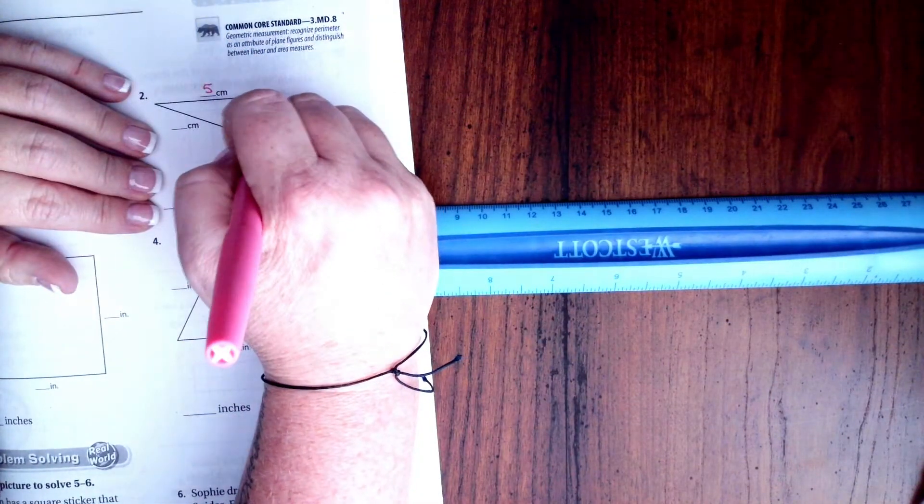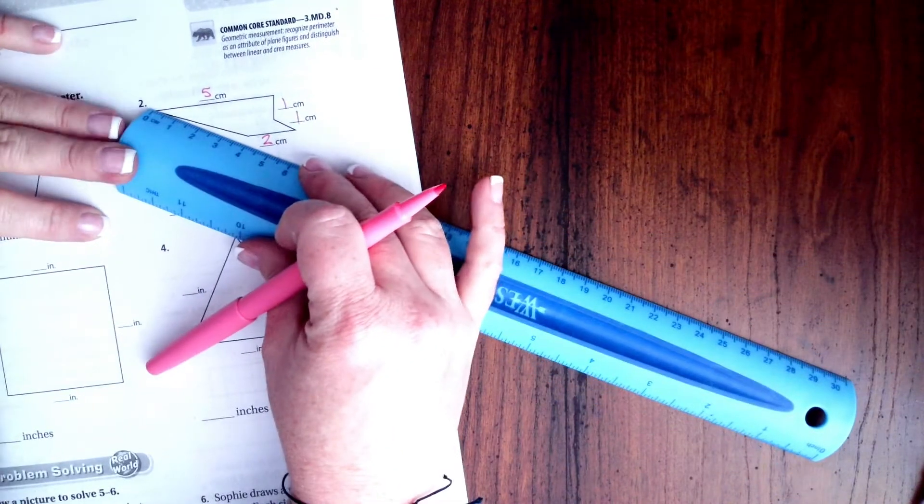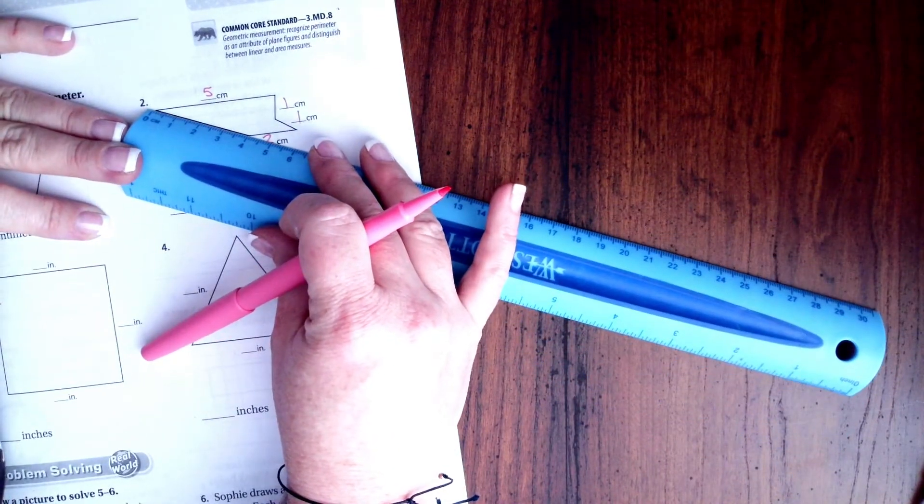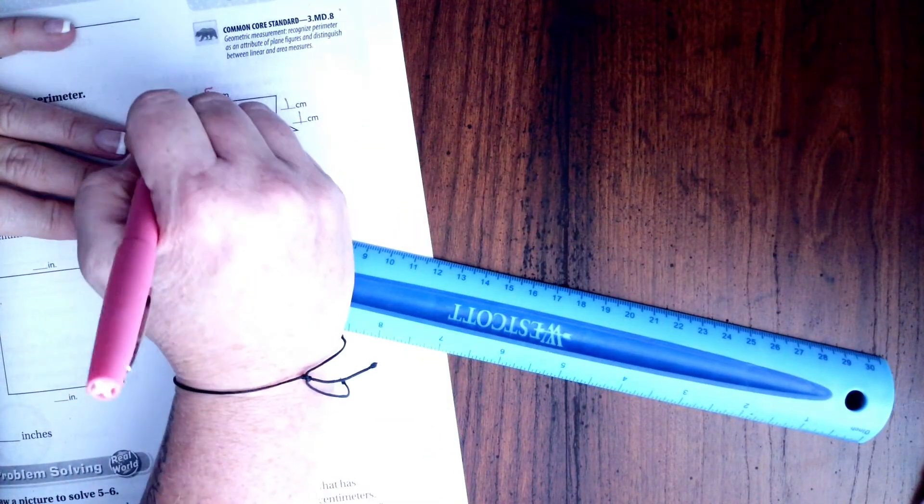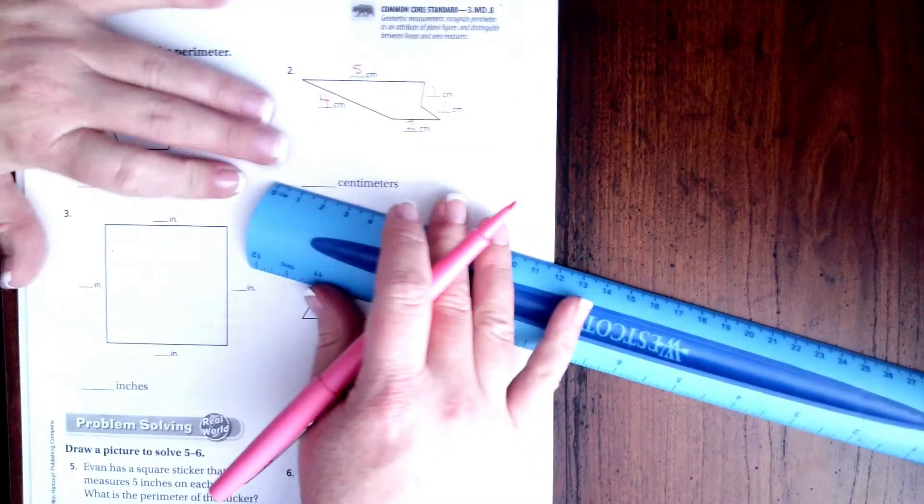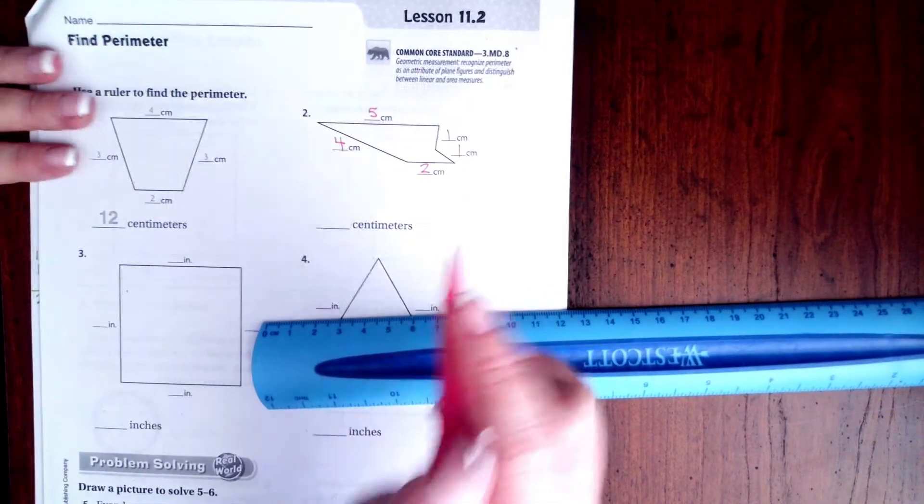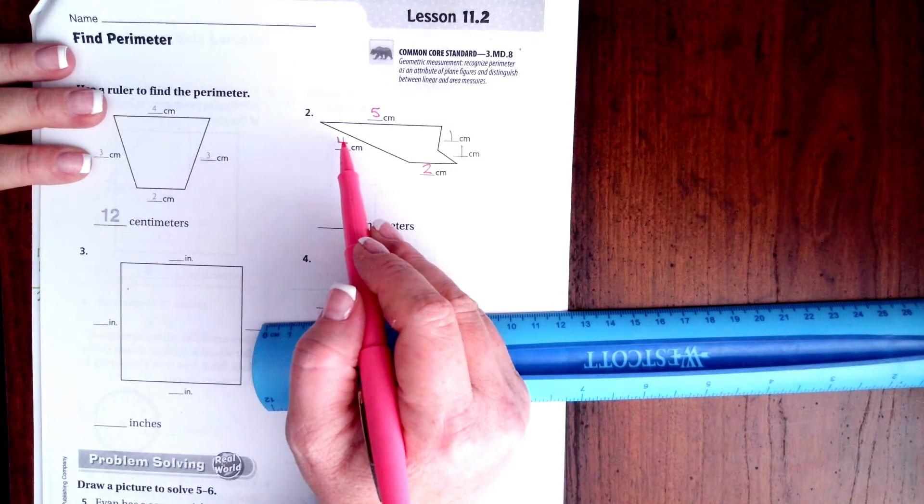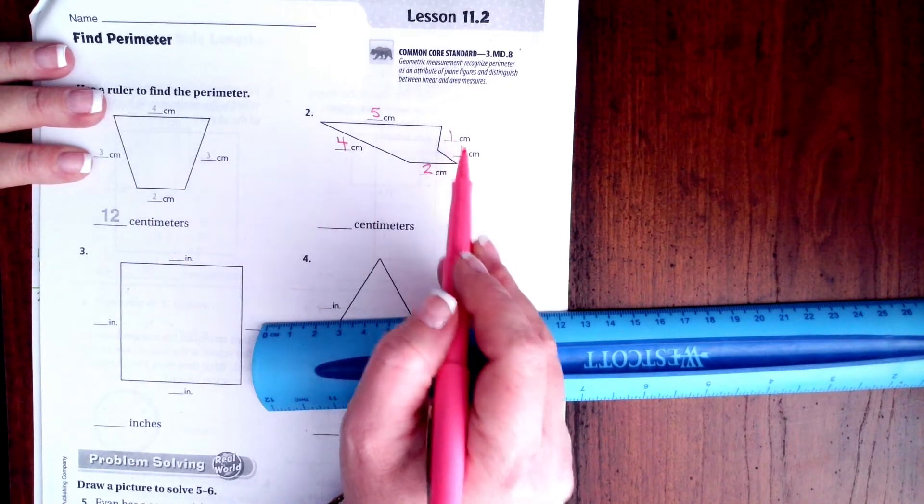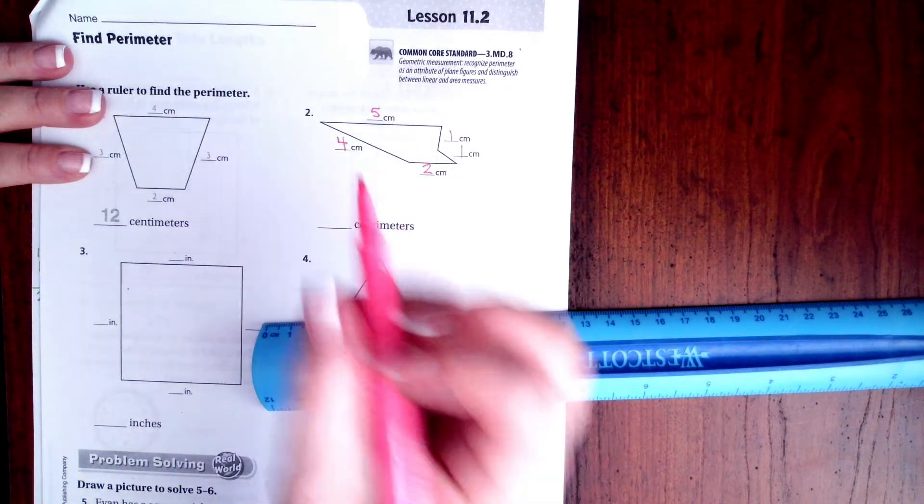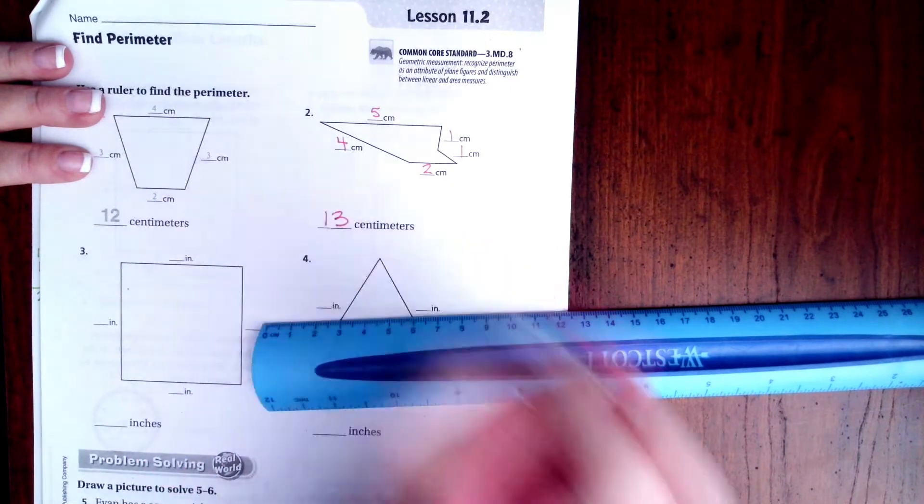Last one right here, and that is four. So now all we have to do is add those up: five plus four is nine, plus one is ten, plus one is eleven, plus two is thirteen. All done!